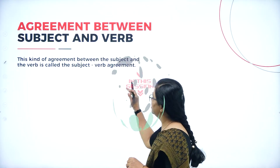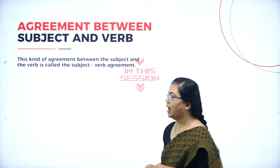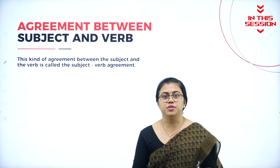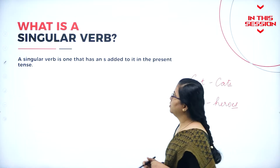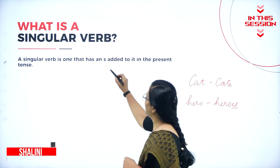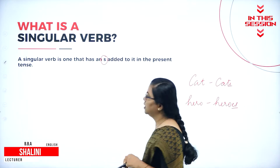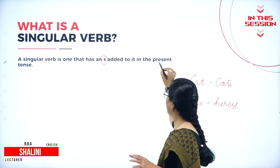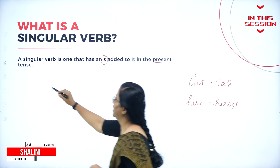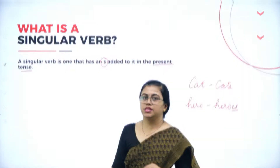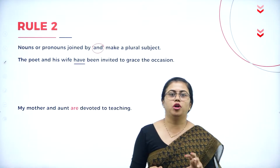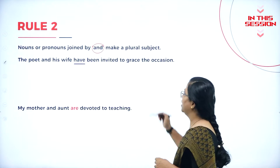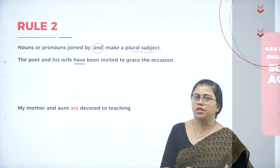The kind of agreement between the subject and the verb in a sentence is called subject-verb agreement. A singular verb is one which has an 's' added — but it has to be added only in the present tense. Any nouns or pronouns you join by adding conjunctions in between them become a plural subject.